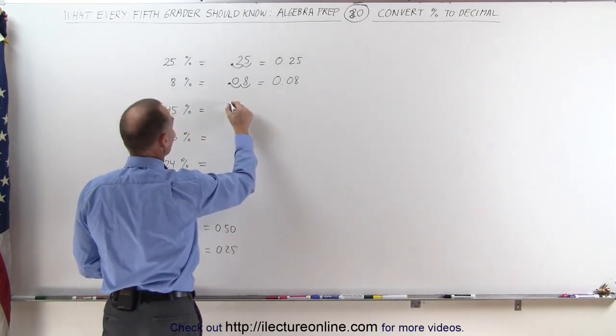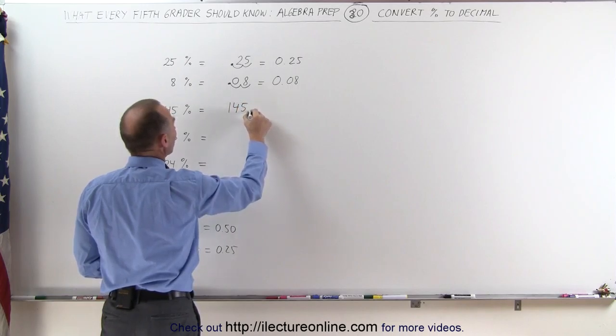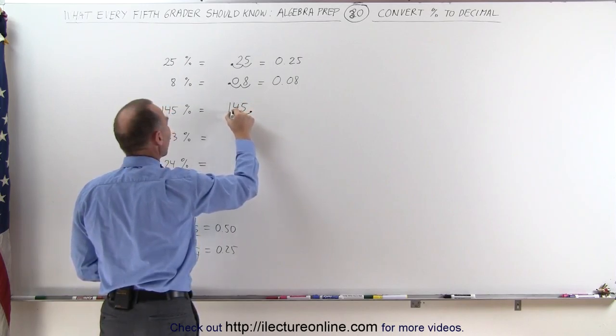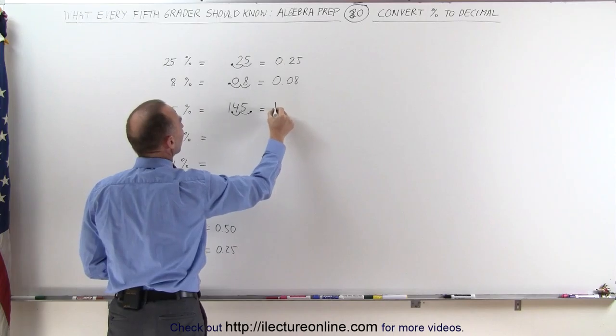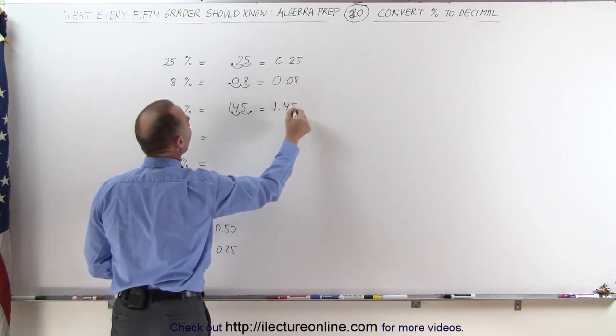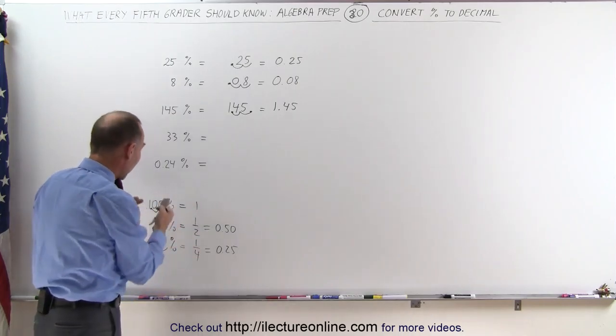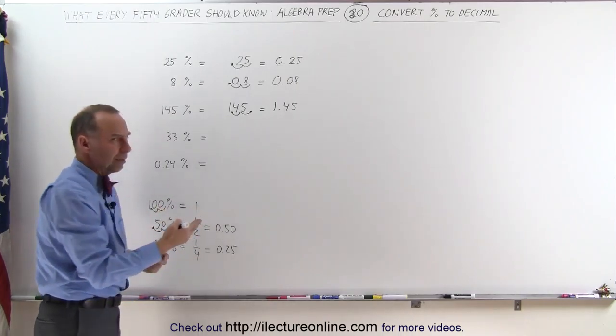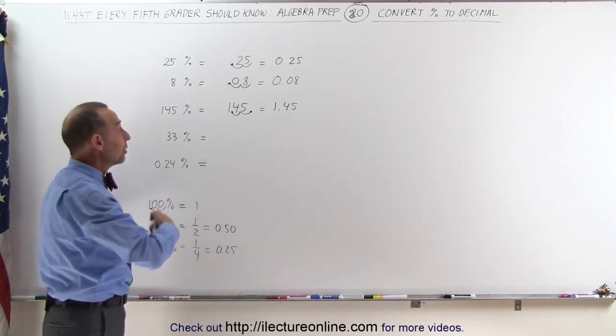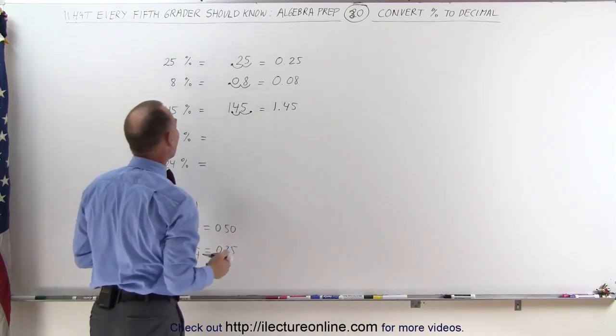145%, let's write the number down, then we move the decimal point over one, two spots, put it right there, which means it's 1.45. 145% must be greater than 1 because 100% equals 1, therefore 145% must be greater than 1, and yes it is. It's 1.45.